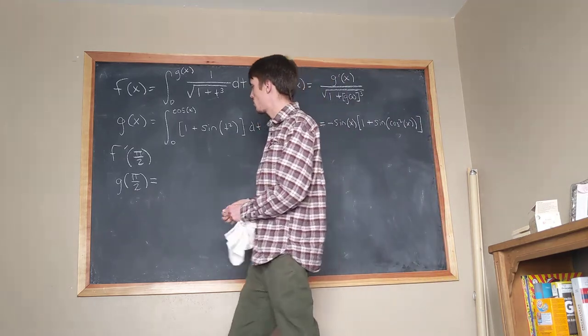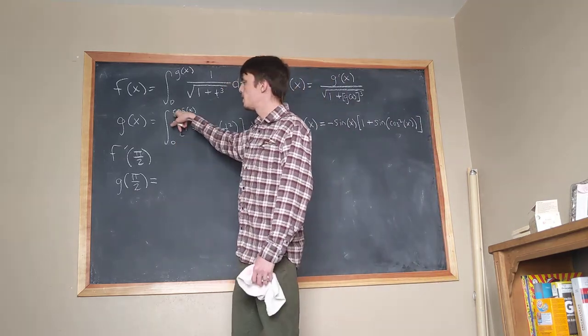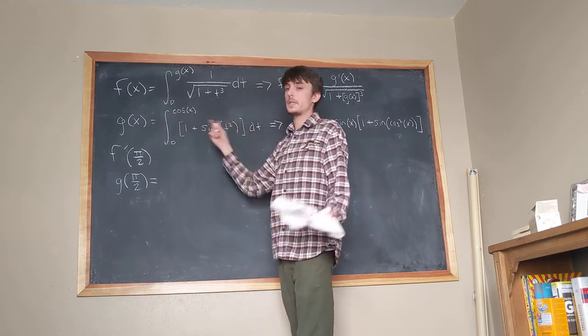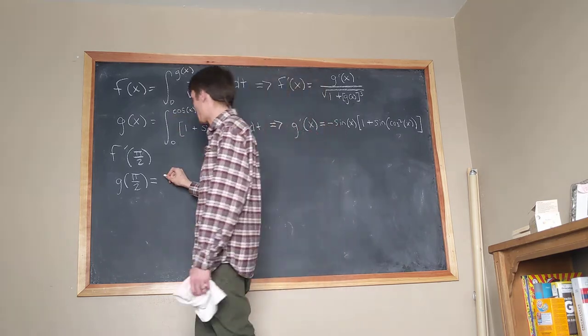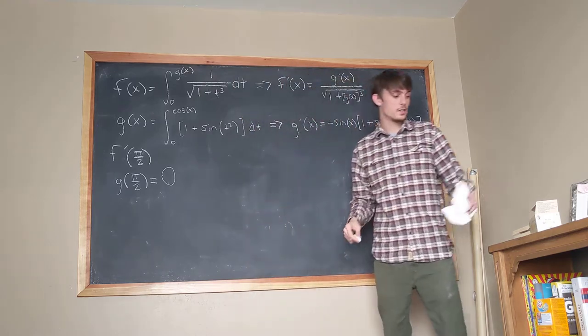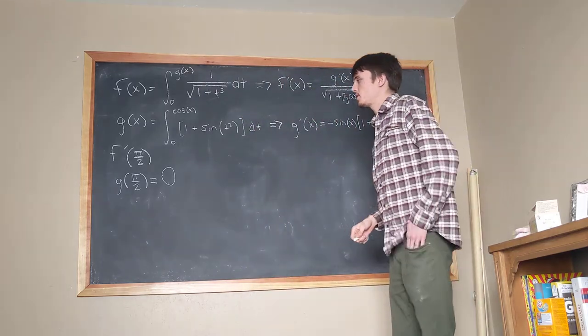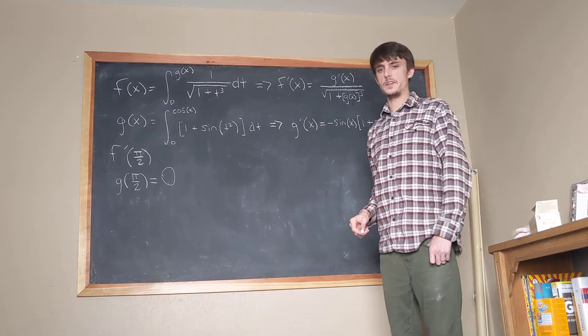Which means that this is going to be equal to the integral from 0 to 0 of, I really don't care anymore, because it's the integral from 0 to 0, which means g prime, uh, sorry, g of pi over 2 is equal to 0. So that's, that's really convenient.